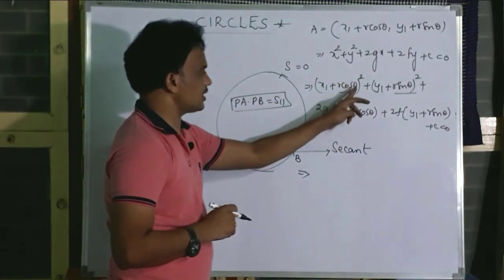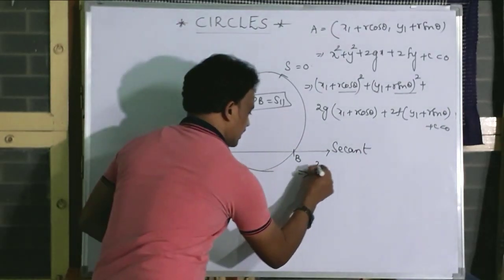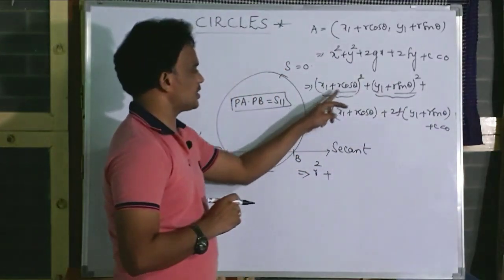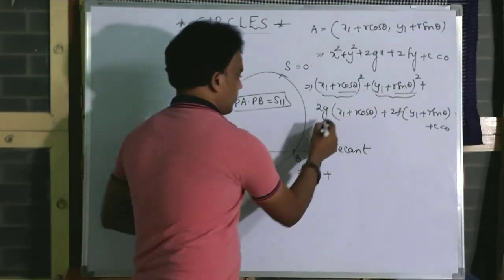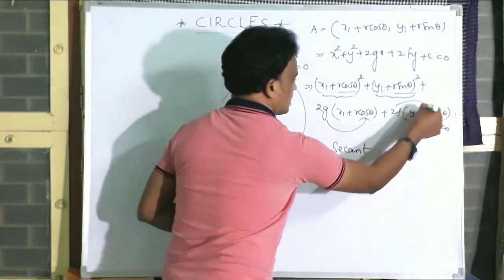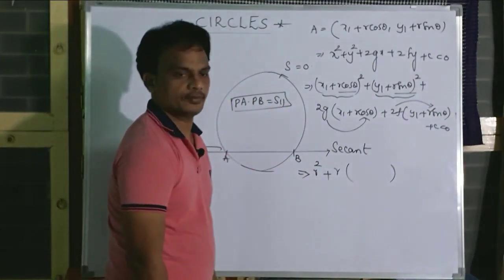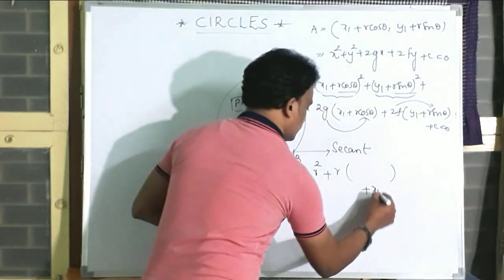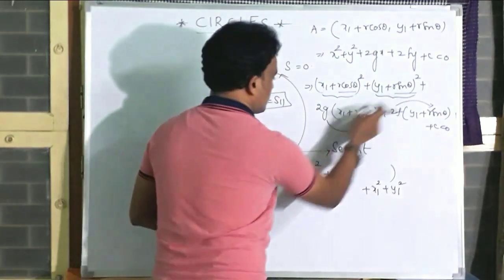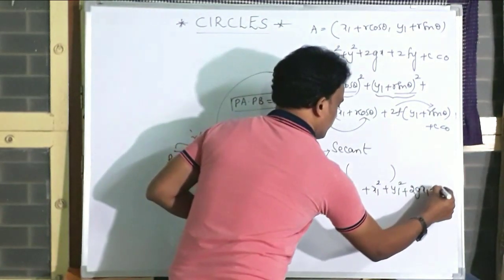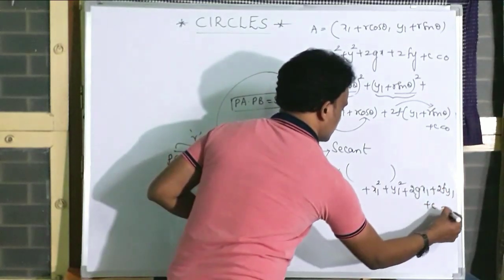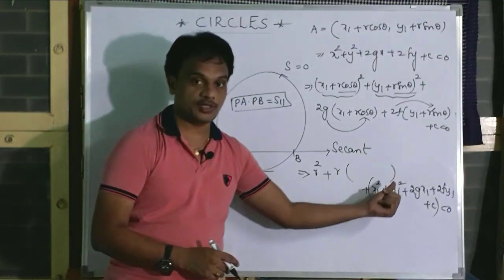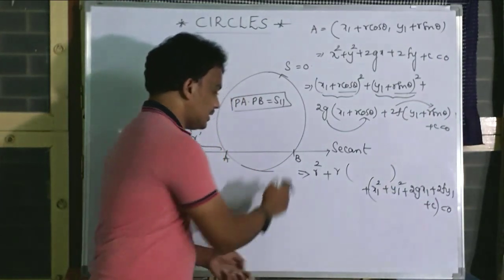Expanding this, we get R² cos²θ plus R² sin²θ, which gives R². Then the linear terms in R are: 2x1·R cosθ, 2y1·R sinθ, 2g·R cosθ, 2f·R sinθ — combined as R into one expression. The remaining constant terms are x1² plus y1² plus 2g·x1 plus 2f·y1 plus C, which equals zero. From the last video, this notation is S11.